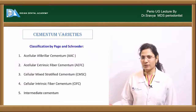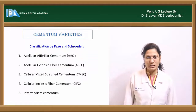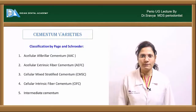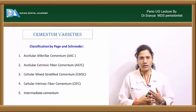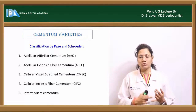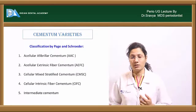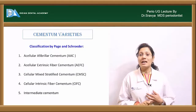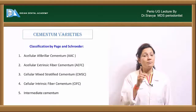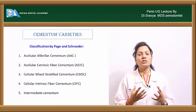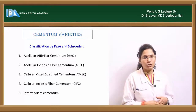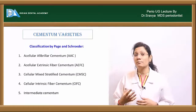An important classification by Page and Schroeder divides cementum into five types. The first is acellular afibrillar cementum — no cells and no fibers. The second is acellular extrinsic fiber cementum — no cells, but it provides attachment to extrinsic fibers from the periodontal ligament, that is Sharpey's fibers.